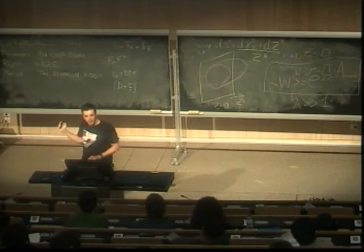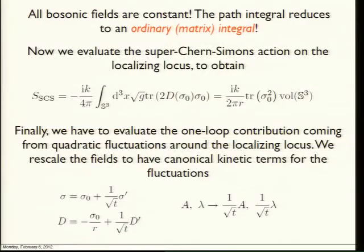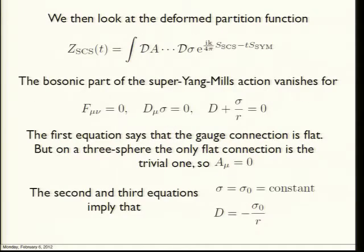This is the saddle point of the theory, and we have to integrate around it. All bosonic fields are constant, so the path integral is no longer a path integral — it's just an ordinary integral. We will be able to reduce the path integral to an ordinary matrix integral, because σ is valued in the adjoint representation of the gauge group, so it's a matrix. We will have to integrate over constant matrices at the end of the day.